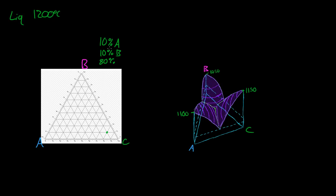So we have a liquid that is 10% A, 10% B, and 80% C. Where is that on the chart? Well, on the bottom, it's maybe somewhere right there. So then we have to go up to 1,200.